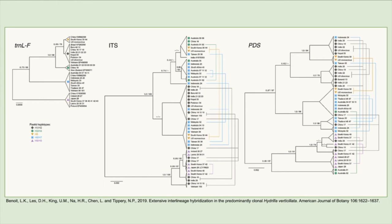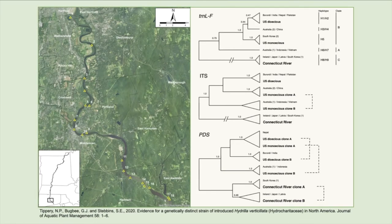This may reinforce that hydrilla could be construed as a single species, even though it has a wide range — and that was the work of the first study. The second study determined that there is a new invasive strain of hydrilla in the United States, which is pretty important news. Prior to our study and the discovery of this population in the Connecticut River in New England around 2016, there were two strains: the U.S. Dioecious and U.S. Monoecious strains, or biotypes.